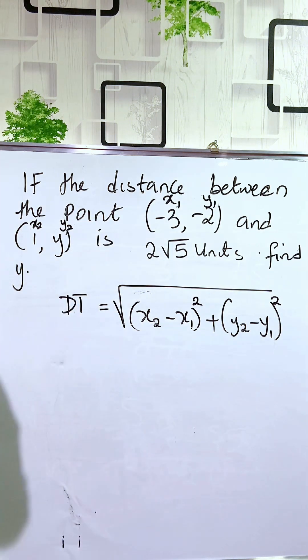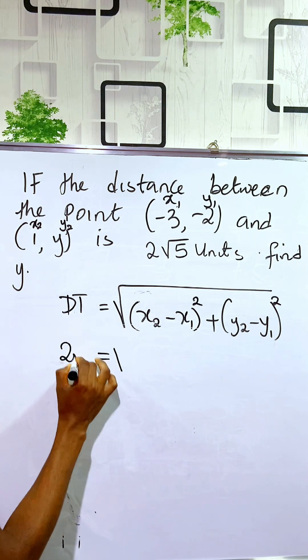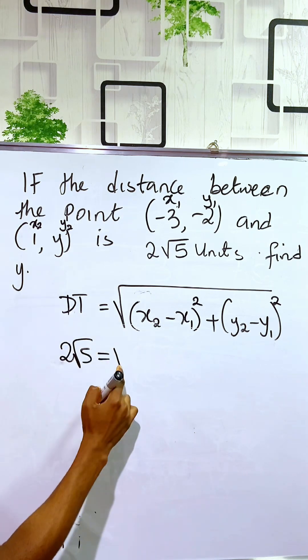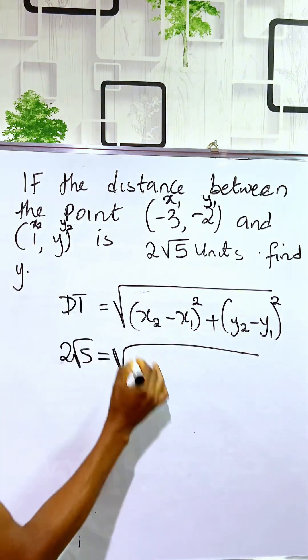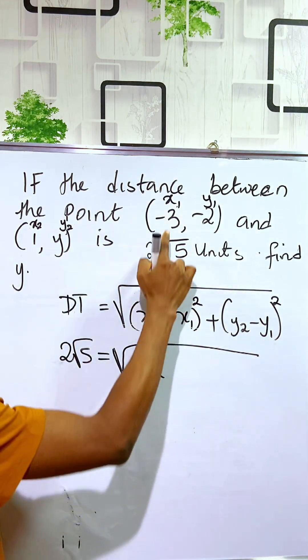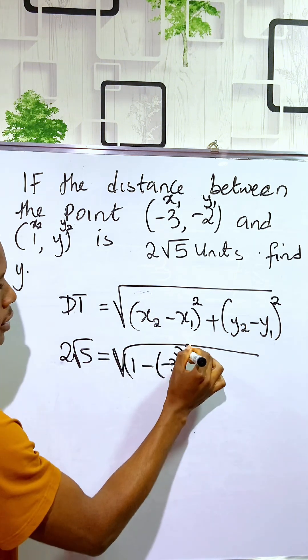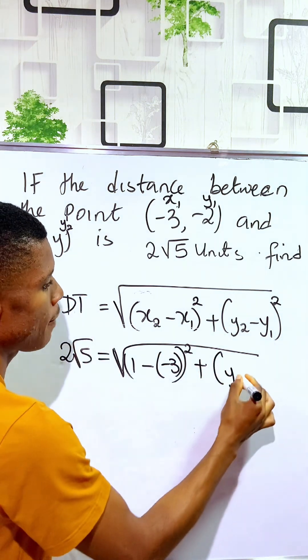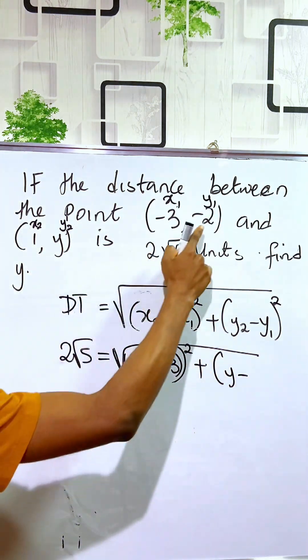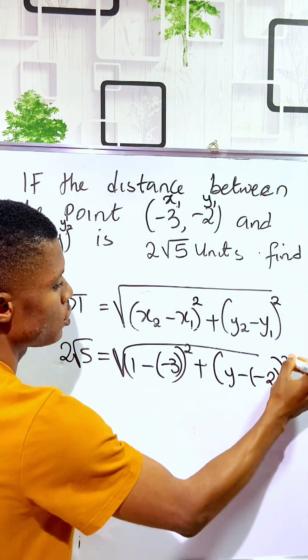So here we are required to find y2. You can now see that the distance is 2√5 units and it's equal to the square root of x2 is 1 minus x1 is -3, all squared, plus y2 is y. You have it as y minus y1 is -2, minus -2, all squared.